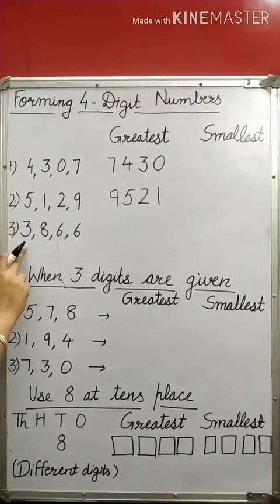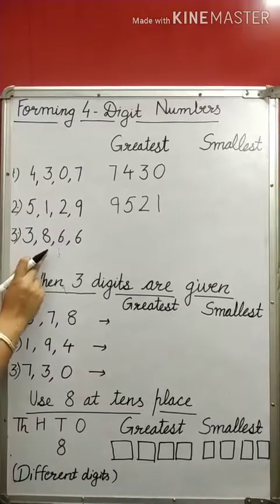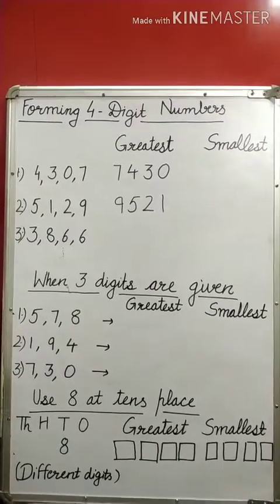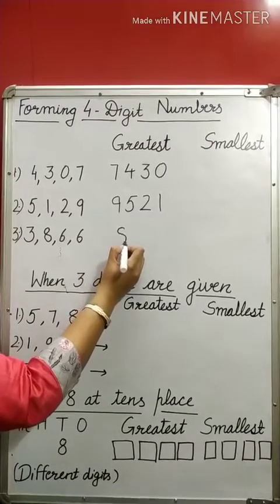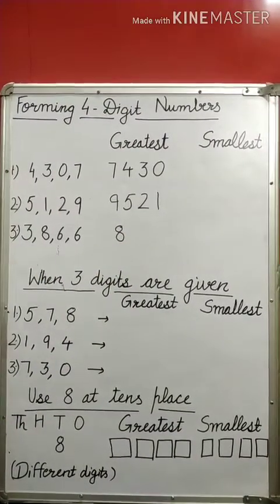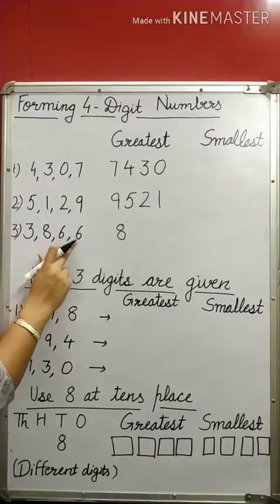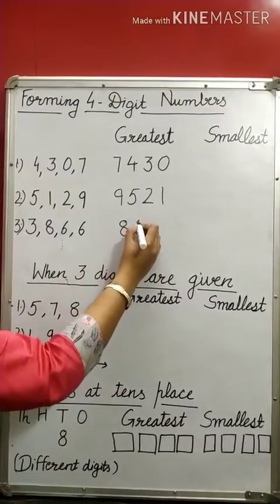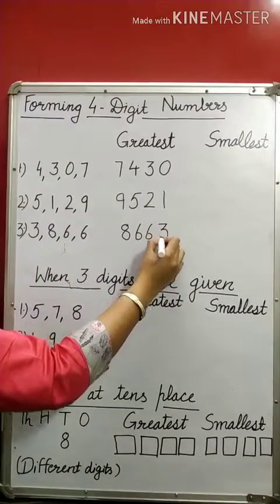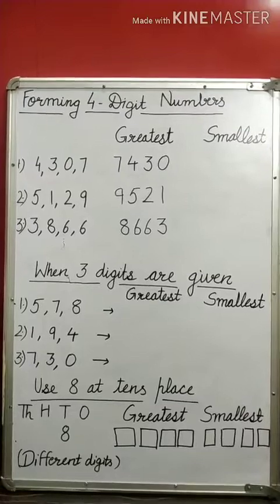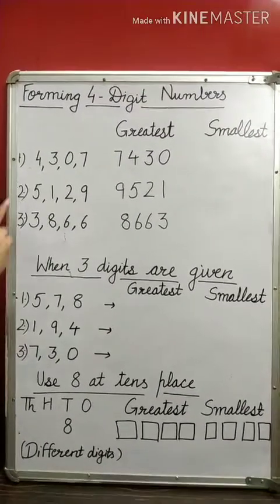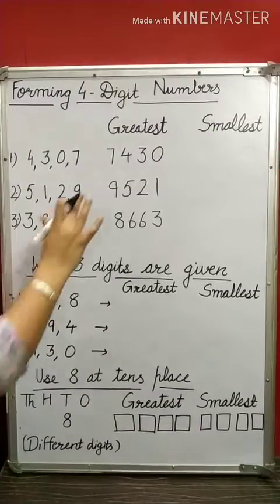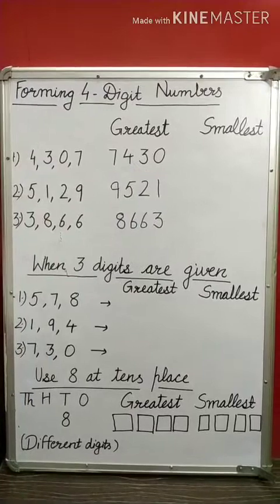Let's take another example. I have written 3, 8, 6, 6. Again, we will arrange them in descending order. 8 first. But this is a special case — I have written a digit twice here. So I will be repeating 6 and 6, then 3. This is how we form the greatest 4-digit number. We simply arrange them in descending order, even when a digit appears twice.